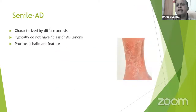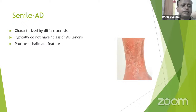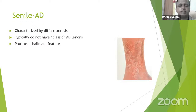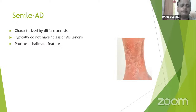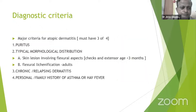The senile form typically presents with diffuse dryness of skin, and pruritus is a hallmark of the senile type of Atopic Dermatitis.